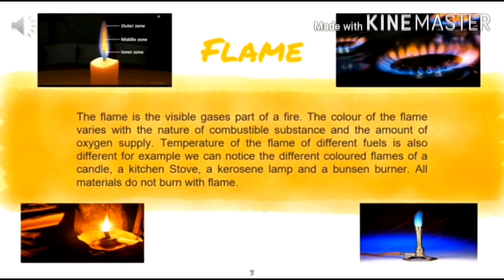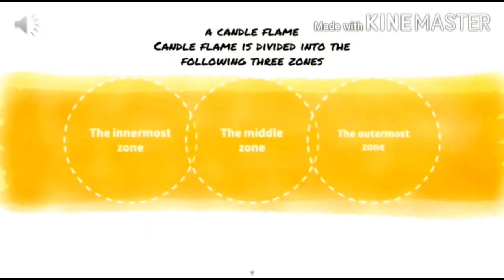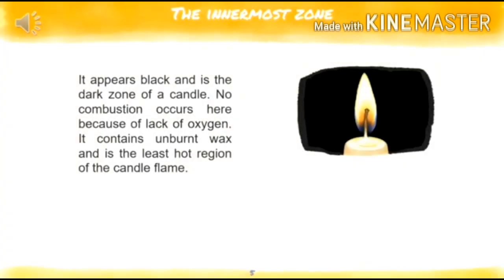The temperature of the flame of different fuels is also different. For example, we can notice the different colored flames of a candle, a kitchen stove, a kerosene lamp, and a Bunsen burner. A candle flame is divided into three zones: the innermost zone, the middle zone, and the outermost zone.